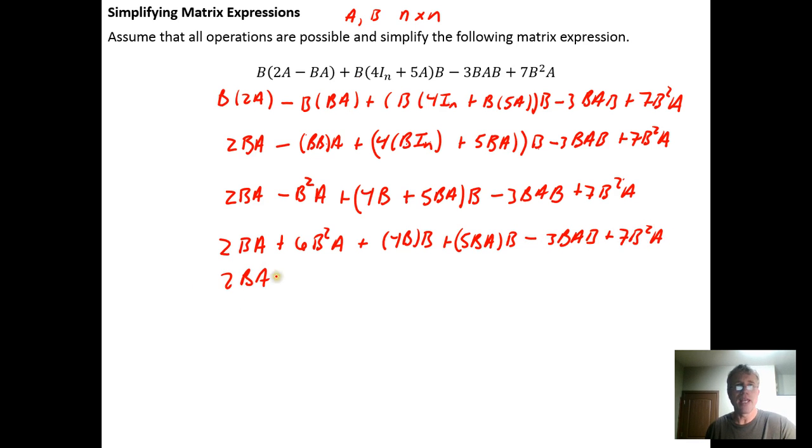We get 2BA plus 6B²A plus the 4. This can be regrouped using the associative property, and we can get B times B inside the parenthesis plus 5 times the BAB, or just 5BAB. I can drop that parenthesis that is associating those terms, minus 3BAB plus 7B²A.